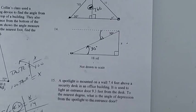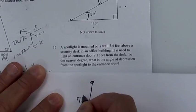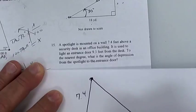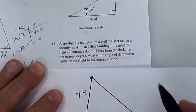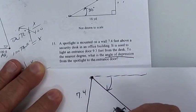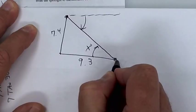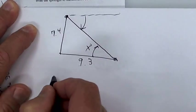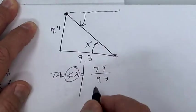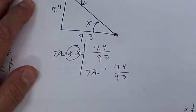You have a spotlight 7.4 feet above a desk. I'm going to put 7.4 above the desk. It shines on a doorway which is 9.3 feet from the desk. They want the angle of depression. The angle of depression is equal to the angle of elevation, so put x right there. This one is opposite over adjacent. The tangent of angle x equals opposite over adjacent. Divide by the word tan — and that should give you your answer.